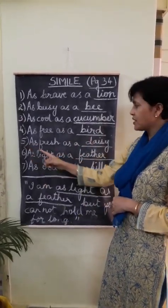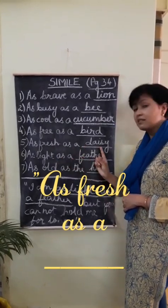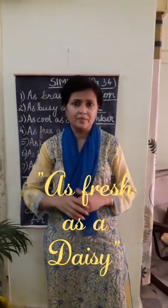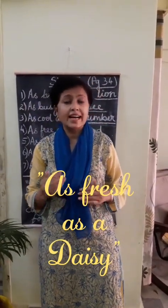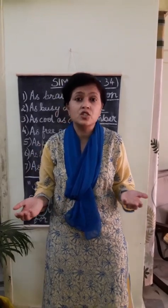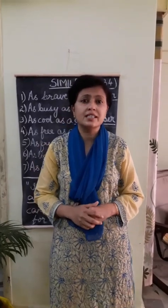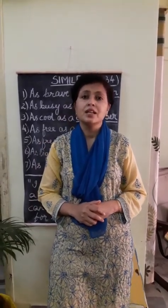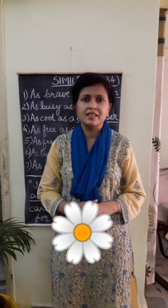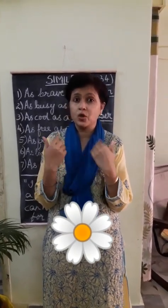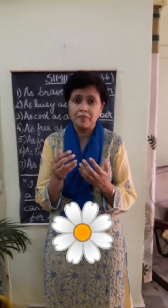Number 5: as fresh as a daisy. A daisy is a flower. Now why do we say 'as fresh as a daisy' and not 'as fresh as a rose' or lotus or lily or any other flower? Because this flower — daisy — at night, closes all its petals as if it is going to sleep, just like we close our eyes at night and go off to sleep.